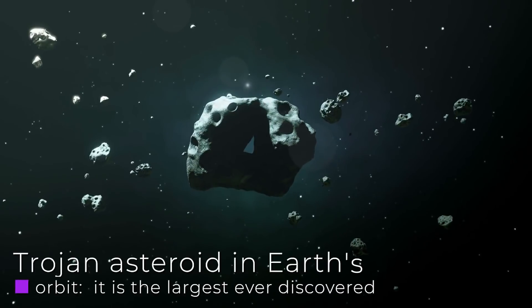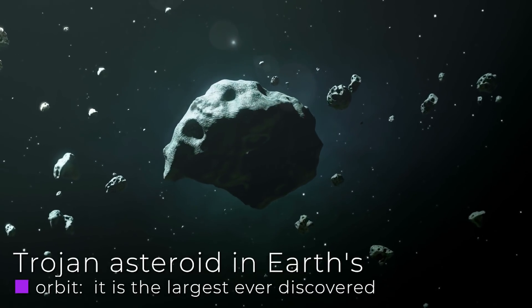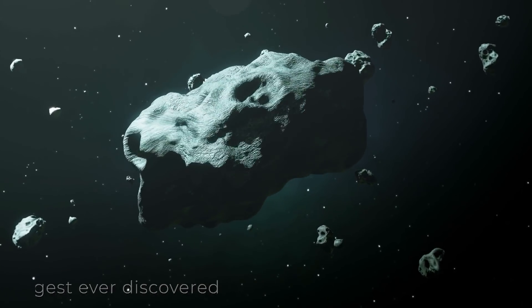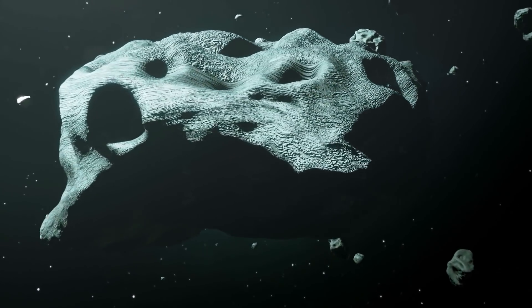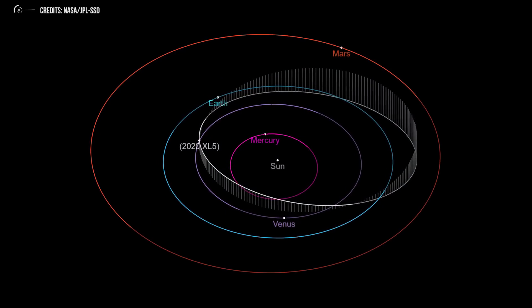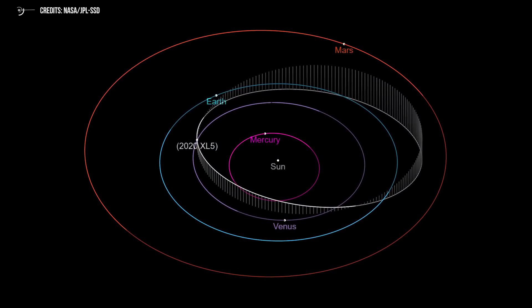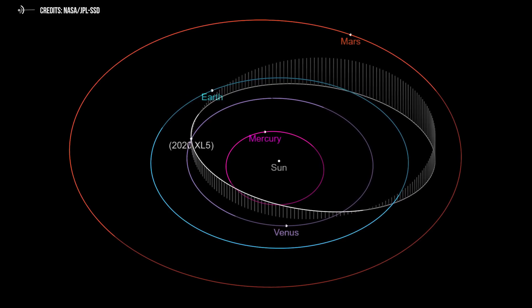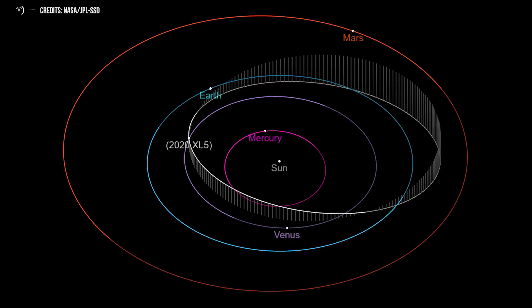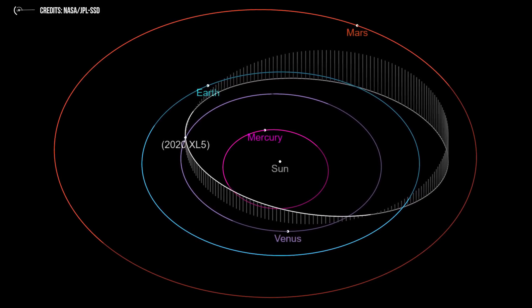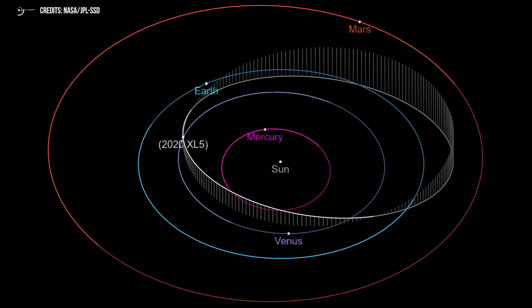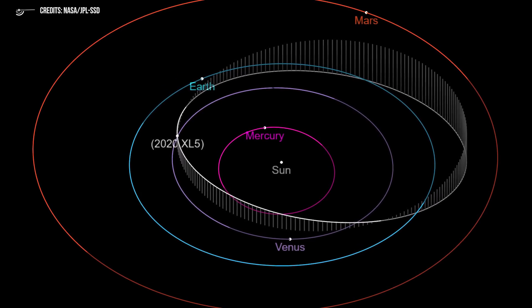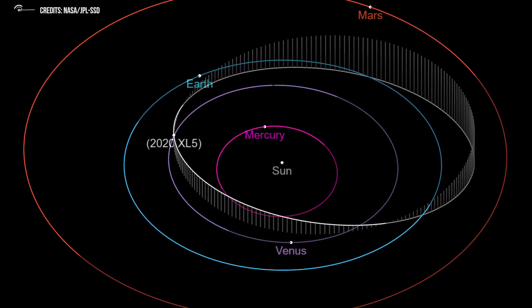Trojan asteroid in Earth's orbit, it is the largest ever discovered. It's official, our planet now has at least two Trojan asteroids, both located at the Lagrangian point L4. The second to be discovered is called 2020 XL5, and it is an asteroid that for only 600 years has been circling with us around the Sun. It will do so for another 4,000 years, then it will be gravitationally perturbed and will take another route to deep space. The discovery is important as we will see, but first, let's remember what is meant by Earth Trojan and Lagrange points.